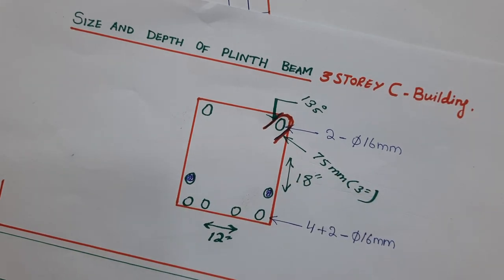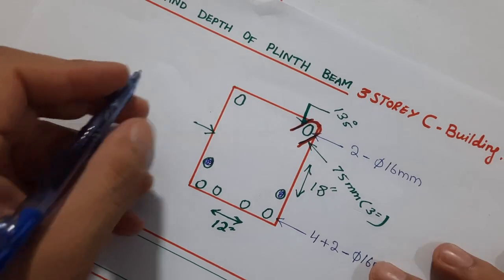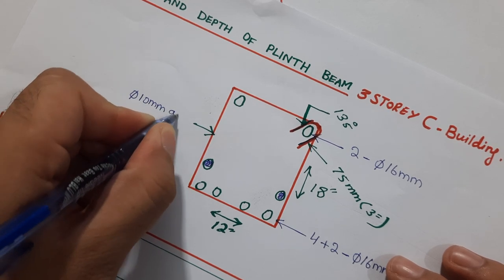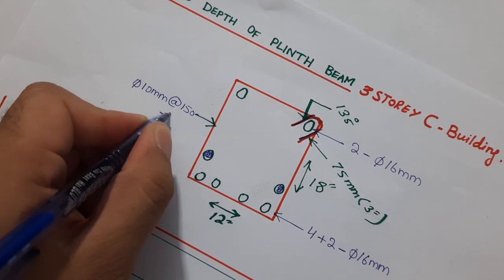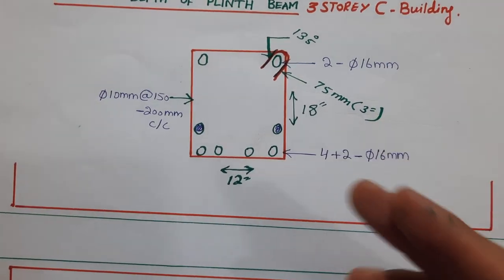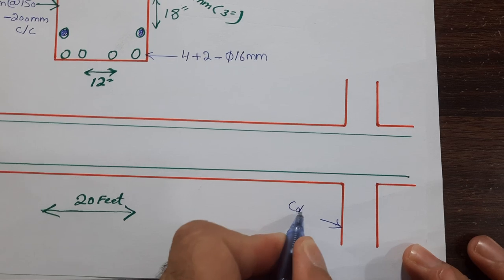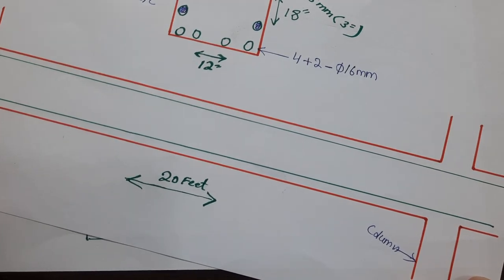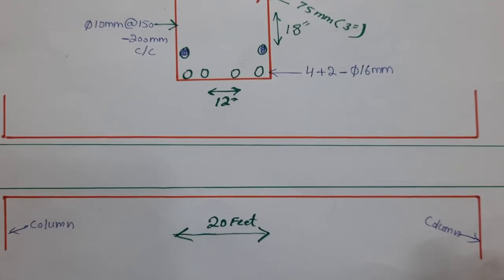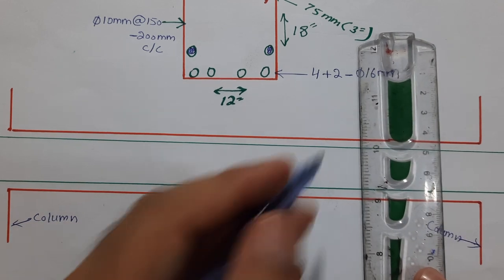That is 75 millimeters or 3 inches. The stirrup diameter is 10 millimeters, with spacing of 150 to 200 millimeters center to center. I will explain where 150 and where 200 millimeters applies using the long section. The span between two columns is 20 feet, so we apply L by 4 spacing — that is the span divided by 4.